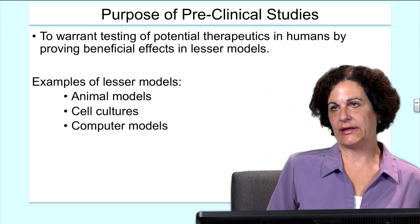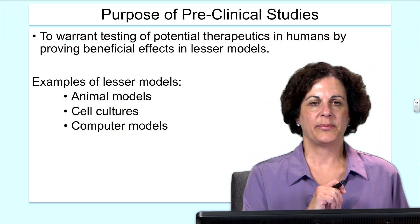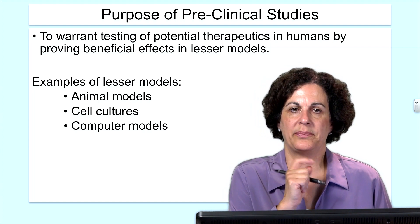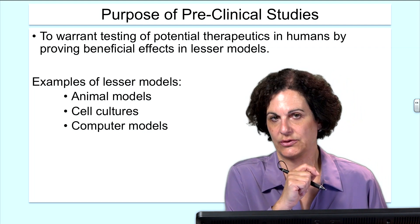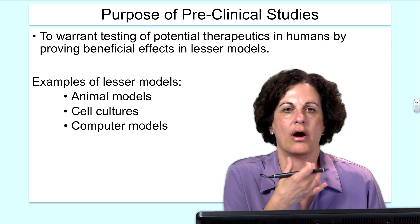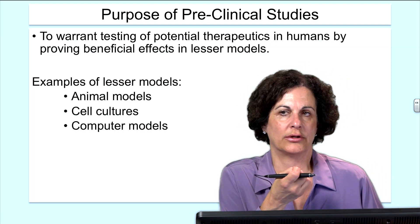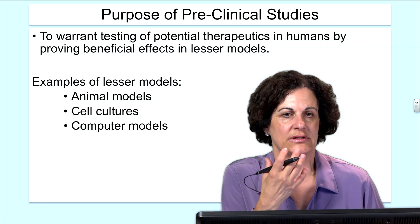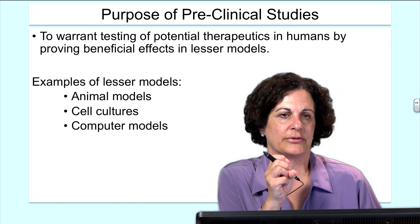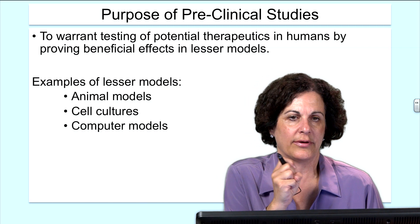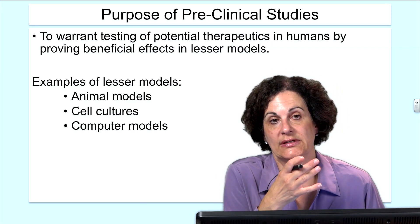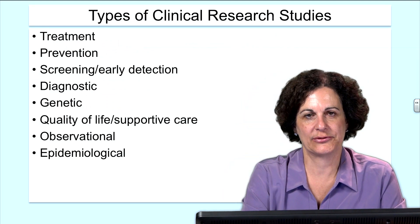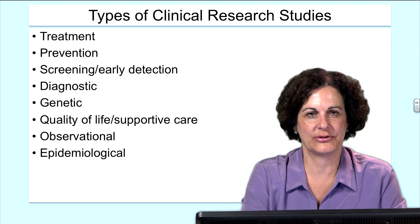The purpose of preclinical studies is to warrant the testing of potential therapeutics in humans by proving beneficial effects in lesser models. Some of those models are animal models, cell culture, or even computer models — where algorithms and decision-making tools are developed to determine whether one drug could be more efficacious than another before moving to human trials.